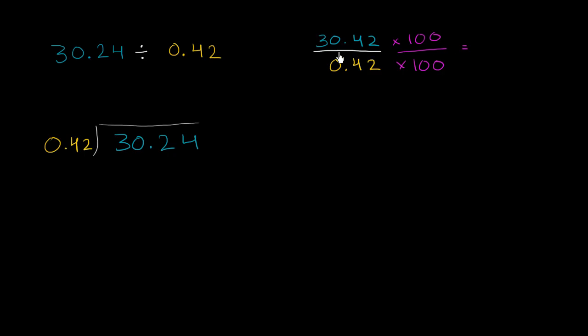So this is going to be 30.42 times 100. Move the decimal two places to the right. Gets you 3,042. The decimal is now there if you care about it. And 0.42 times 100. Once again, move the decimal two places to the right. It is now 42.